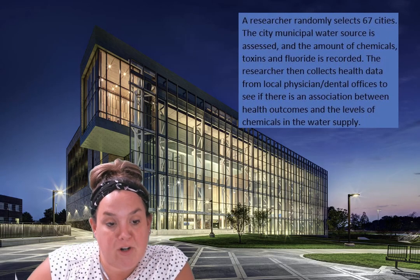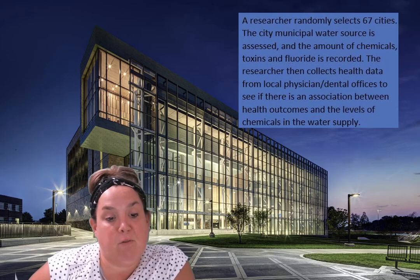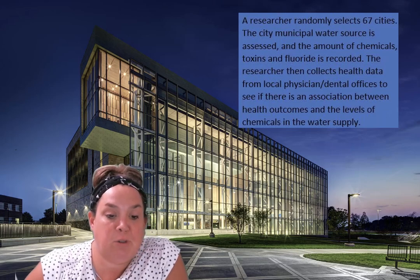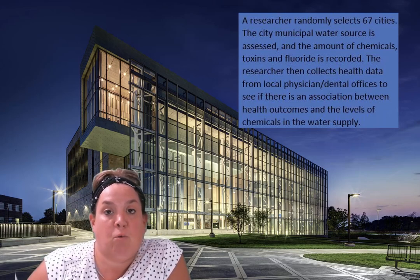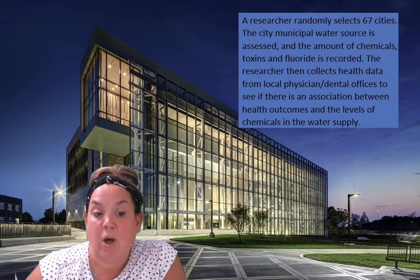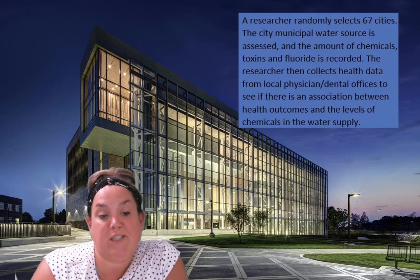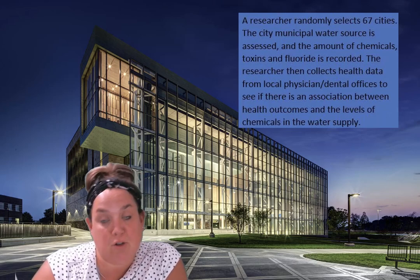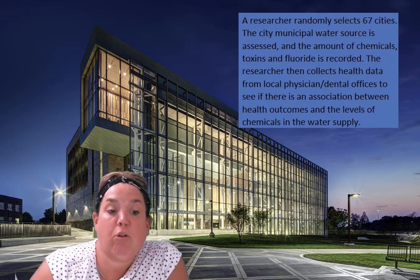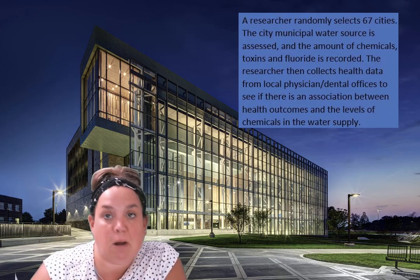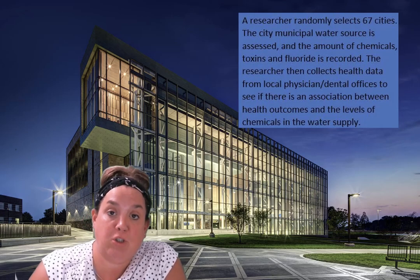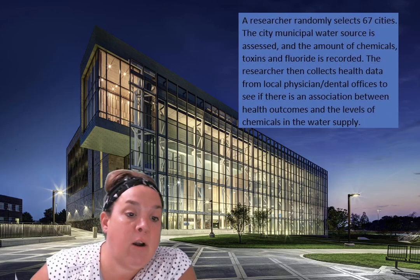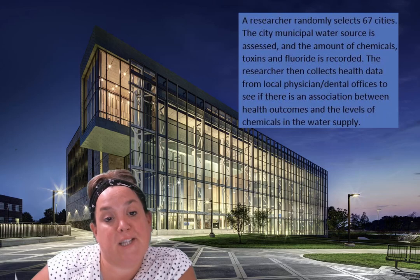The next one: a researcher randomly selects 67 cities. The city municipal water source is assessed and the amount of chemicals, toxins, and fluoride is recorded. The researcher then collects health data from local physicians and dental offices to see if there's an association between health outcomes and levels of chemicals in the water supply. All that was done was data collection — no action was taken on the participants or cities — so that is an observational study. You're looking for those keywords of assigning or treating someone, which indicate an experiment. If there are no action words in terms of what you're doing to your participants, then it's an observational study.